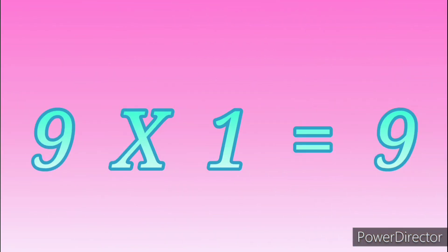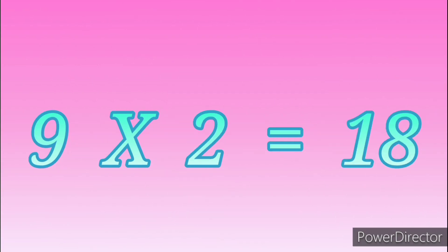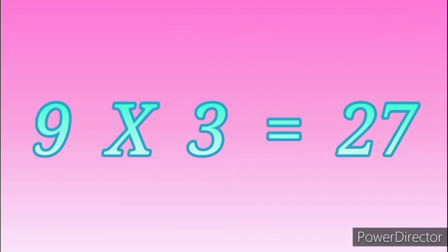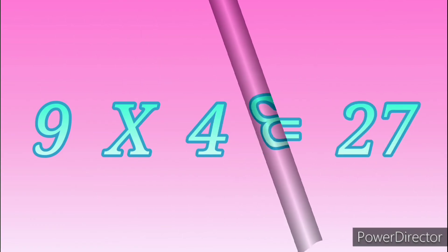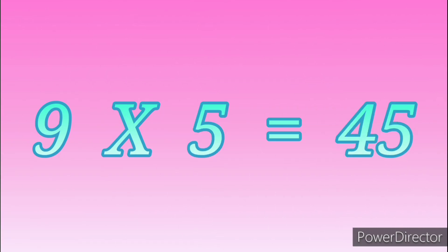Table of Nine. 9 ones are 9. 9 twos are 18. 9 threes are 27. 9 fours are 36. 9 fives are 45.